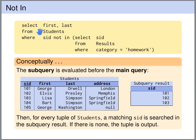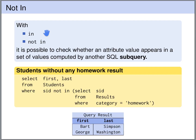In the outer query we query the students table and we select the first and last name of all the students such that the SID does not appear in this table. So which of the students do not appear? Bart Simpson and George Washington do not appear in this table, so they will be selected for the output. As a result we get a table that contains Bart Simpson and George Washington.